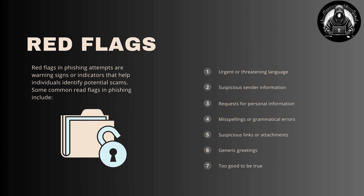Red flags. Red flags in phishing attempts are warning signs or indicators that help individuals identify potential scams. Some common red flags in phishing include: urgent or threatening language, suspicious sender information, requests for personal information, misspellings or grammatical errors, suspicious links or attachments, generic greetings, and offers that seem too good to be true.